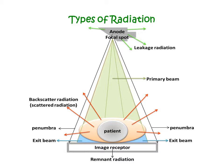Penumbra is a kind of radiation that results from the size of the focal spot, and it can cause image blur — that is why we use a collimator. As shown by the black arrows on both sides, radiation from the anode or focal spot travels outward and will hit near the image receptors, and this is penumbra. It is also where exit radiation is emitted.